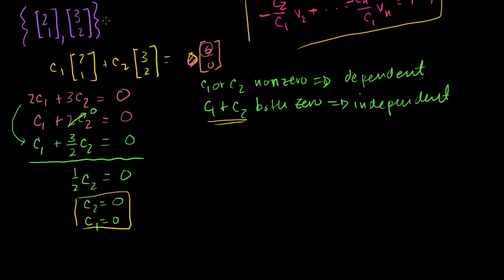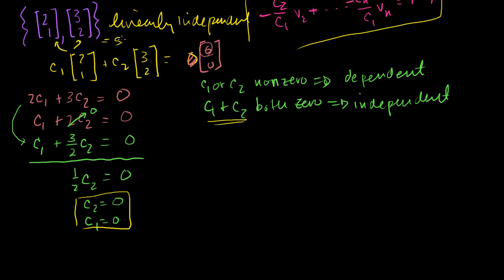The only solution involves both c1 and c2 being equal to zero. So this is a linearly independent set of vectors, which means neither of them is redundant — you can't represent one as a combination of the other. Since we have two linearly independent vectors in R2, their span equals all of R2. If one were just a multiple of the other, the span would have been just a line within R2.